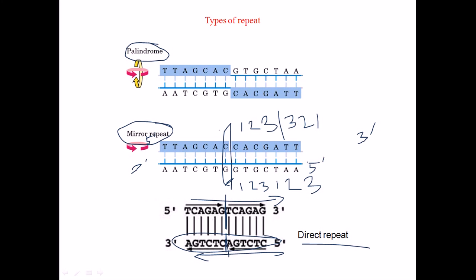Now let us talk about palindromic sequences, which are a little bit more complex. This is similar to the mirror repeat, but instead of placing the mirror on the same strand, we place it on the opposite strand. In mirror repeats, the imaginary mirror is placed in the same strand; in palindromes, the mirror is placed in the other strand.